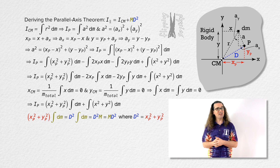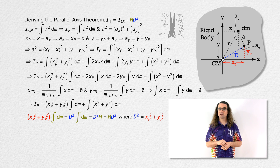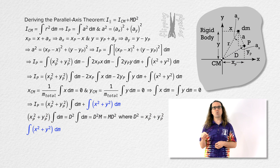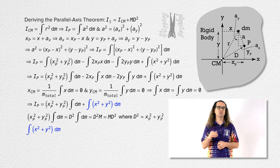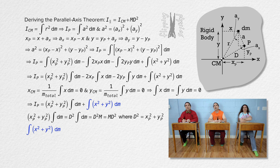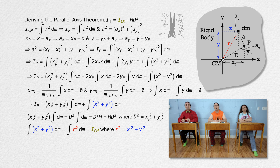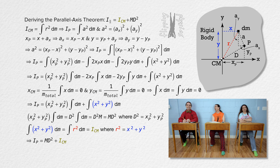Now let's look at just the second term: the integral of the quantity x squared plus y squared with respect to mass. X squared plus y squared equals r squared, where r is the variable distance from the center of mass to dm. That is the moment of inertia about the axis which passes through the center of mass of the rigid body. We now have the whole parallel axis theorem — we derived it.